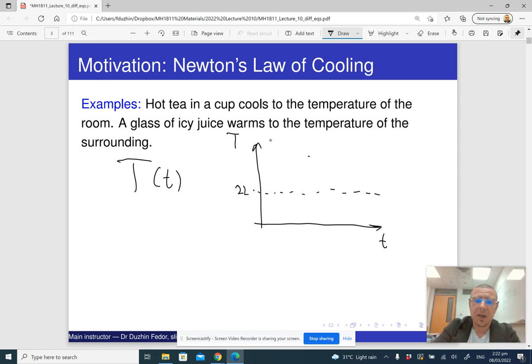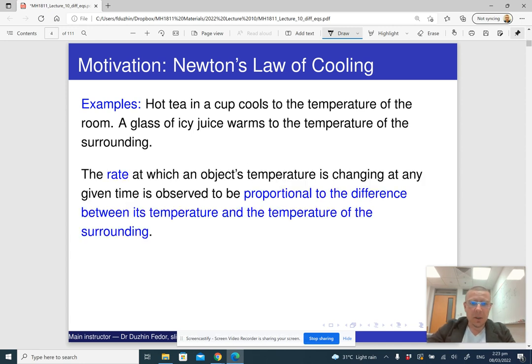And probably initially the temperature of the tea, when I just added boiling water to it, was about 95 degrees or something like that. And then it's clear that the temperature is going to steadily go down and eventually it's going to stabilize at 22 degrees.